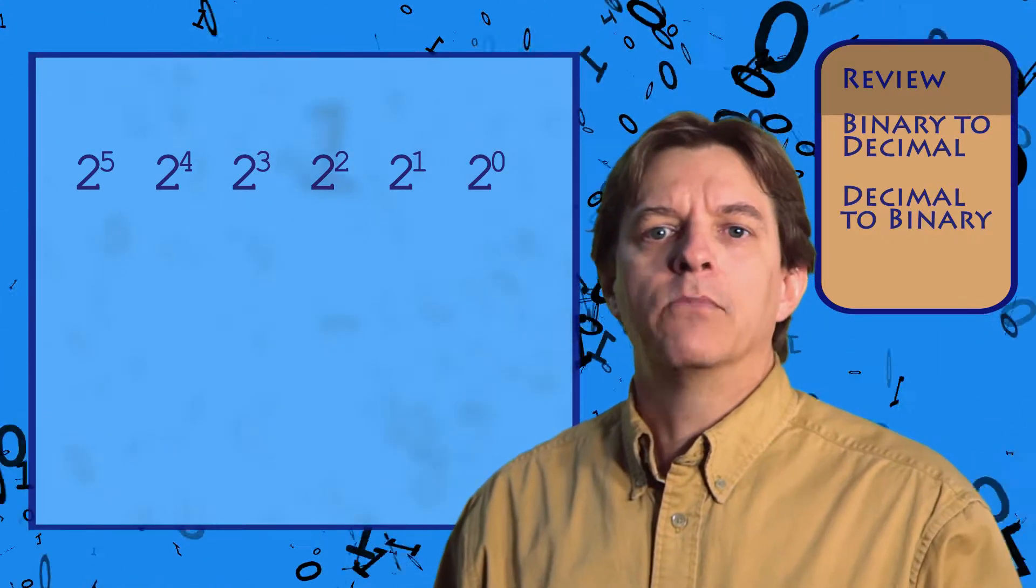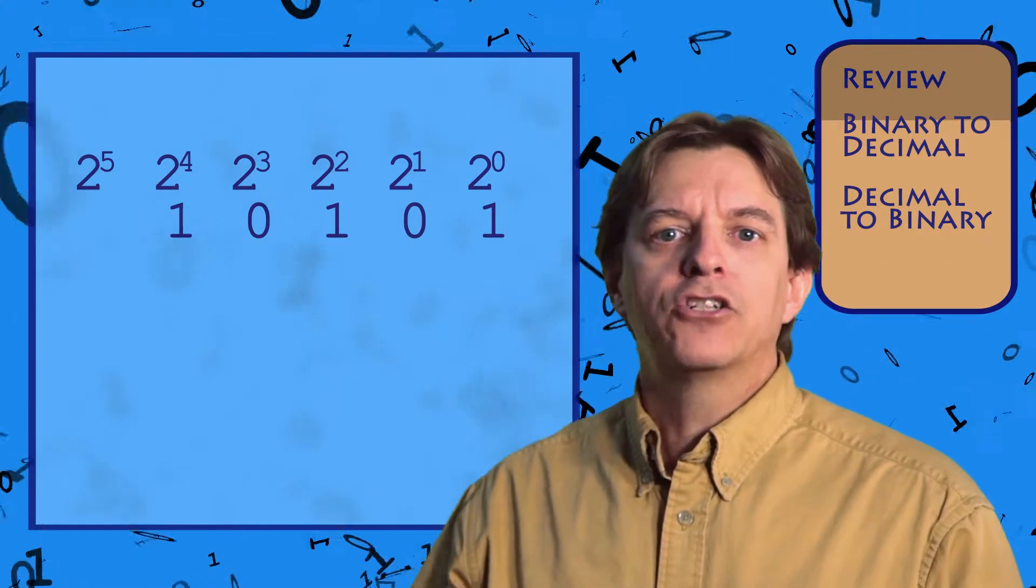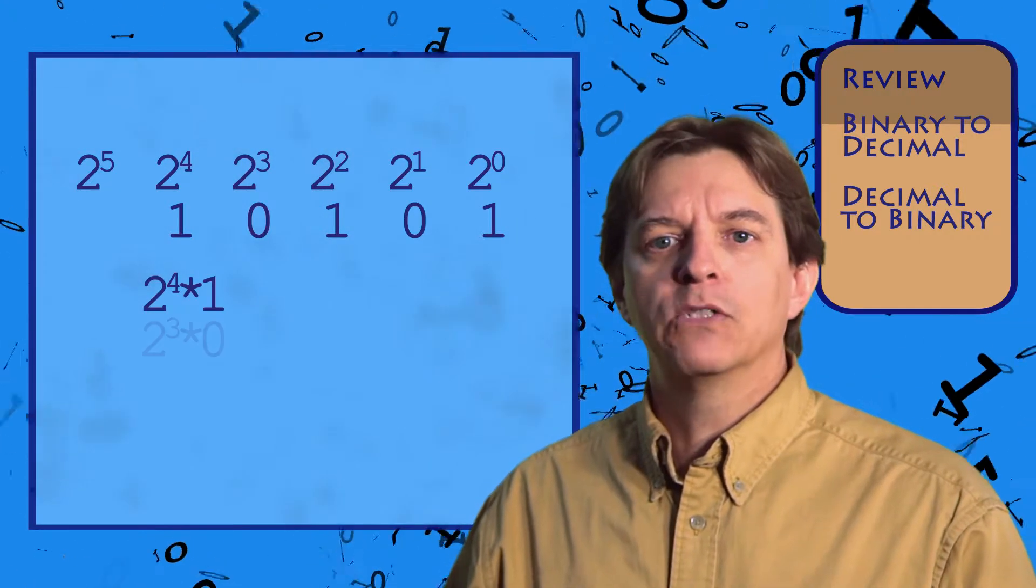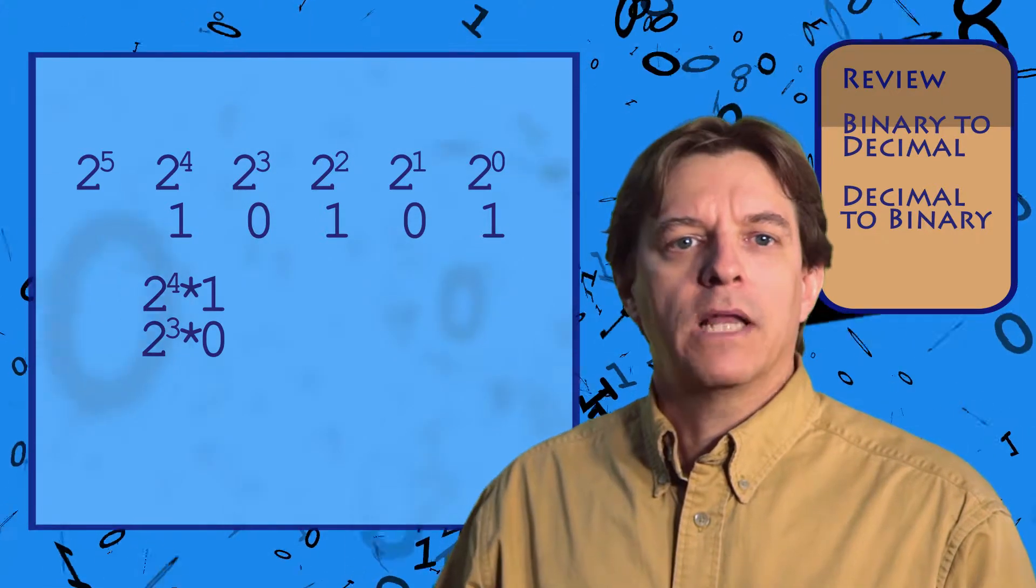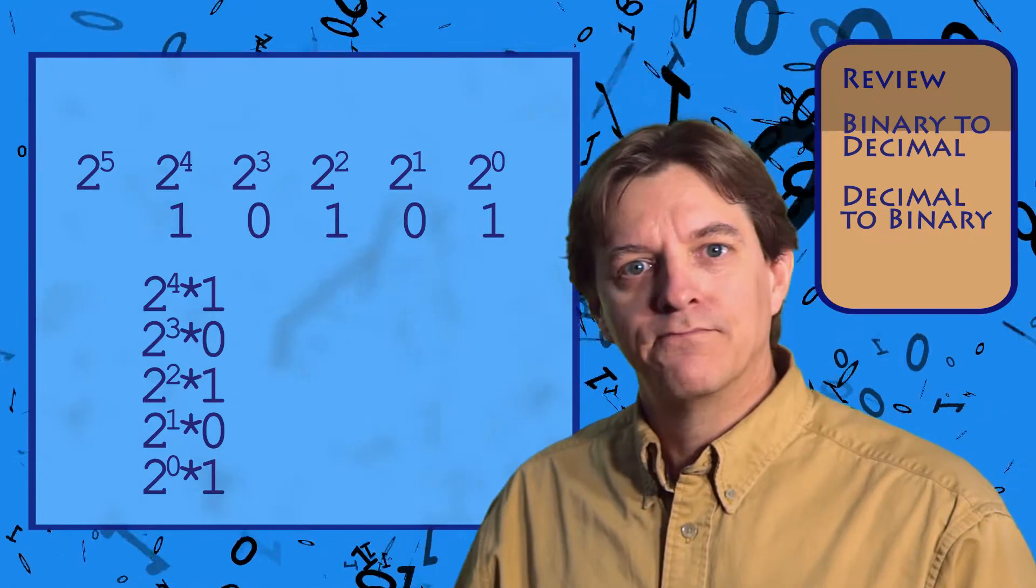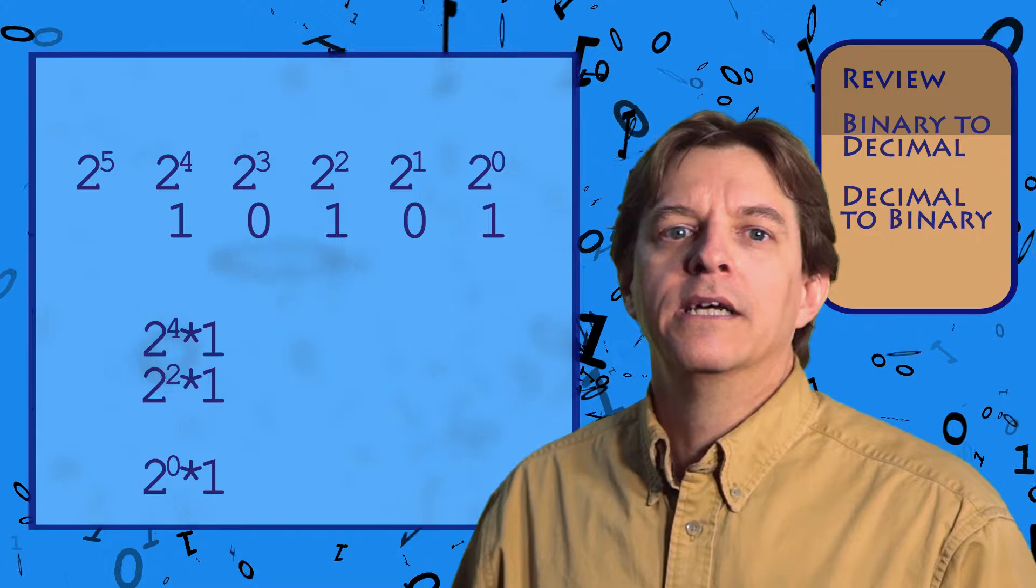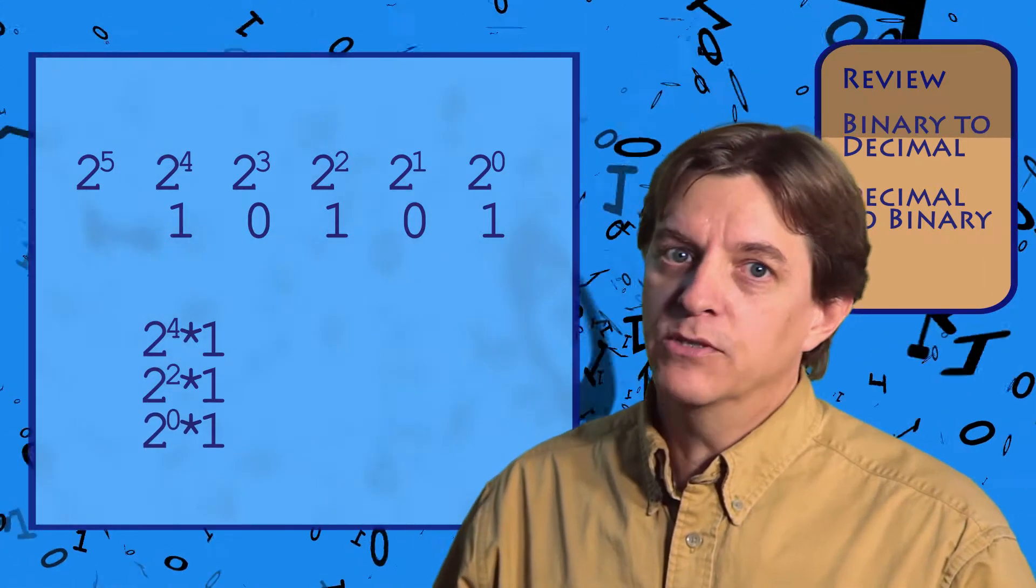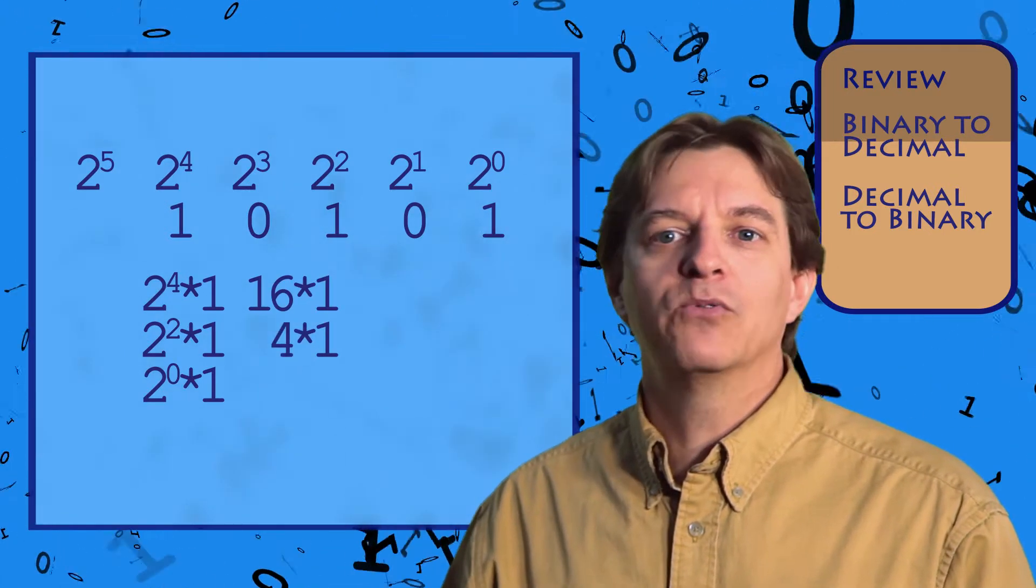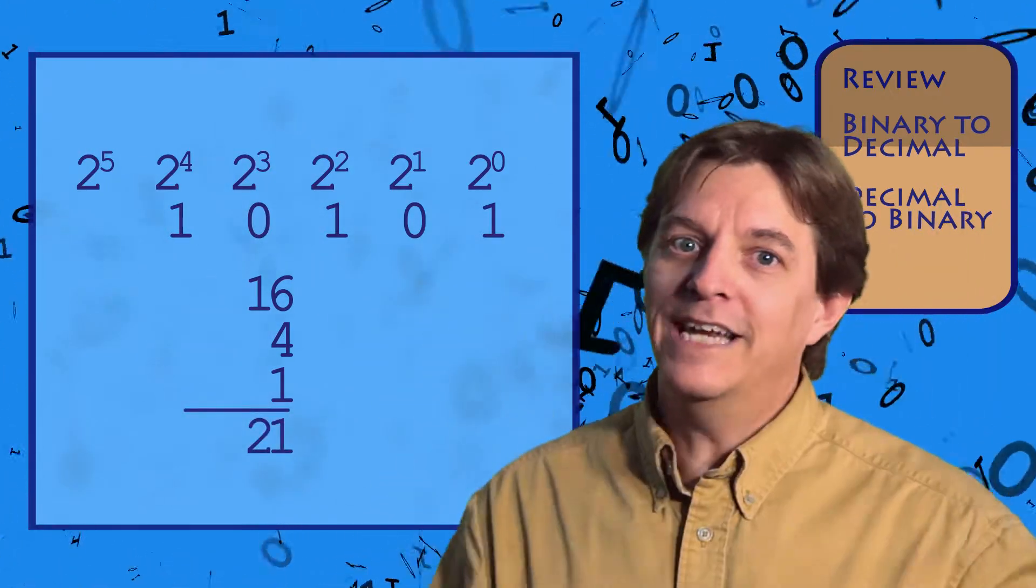What's the decimal value of the number 10101? Given that each column represents a power of 2, and each column can only have a value of 0 or 1, this means its value is 2 to the 4 times 1 plus 2 to the 3 times 0 plus 2 to the 2 times 1 plus 2 to the 1 times 0 plus 2 to the 0 times 1. Removing the items multiplied by 0 gives us 2 to the 4 times 1 plus 2 to the 2 times 1 plus 2 to the 0 times 1. Evaluating the exponents gives us 16 times 1 plus 4 times 1 plus 1 times 1, and this all simplifies to 16 plus 4 plus 1, or 21 in decimal.